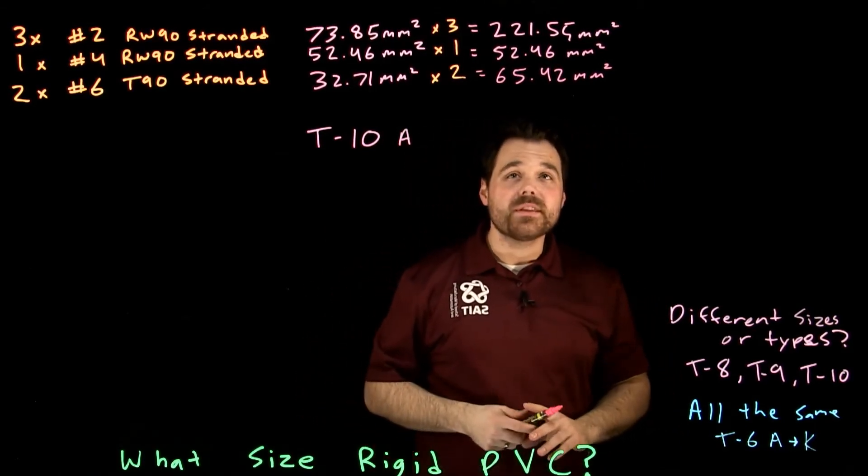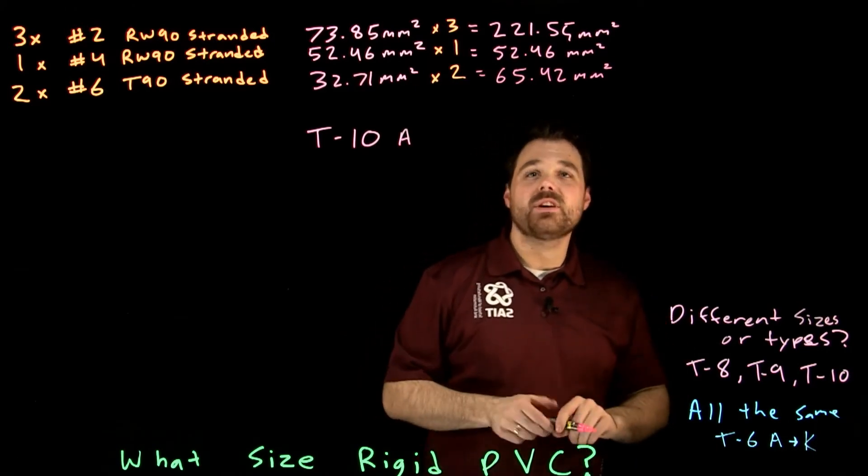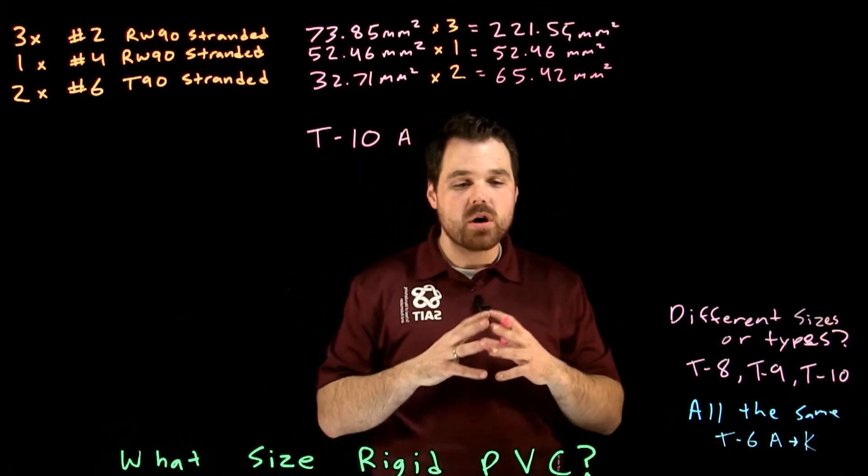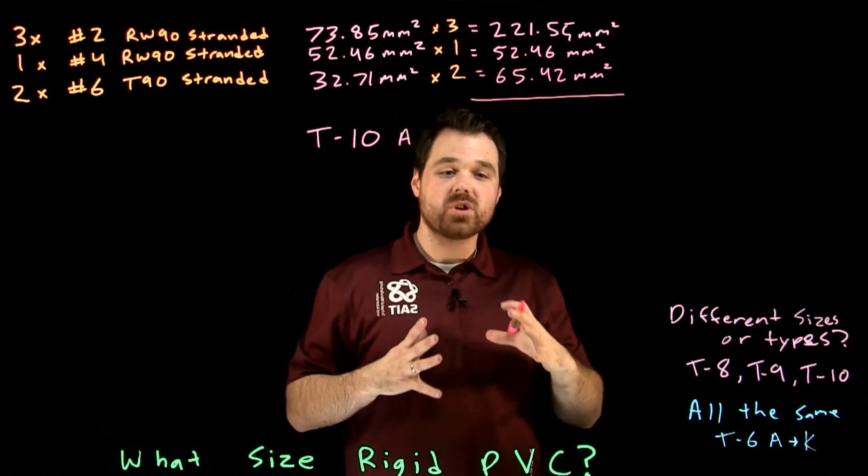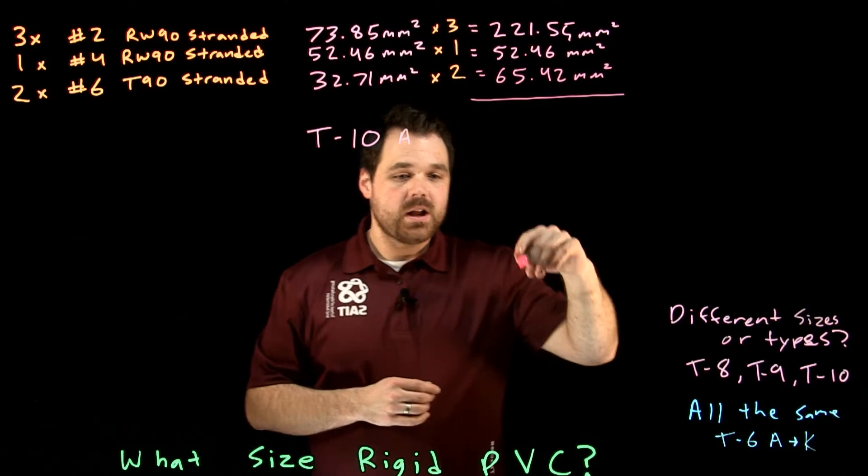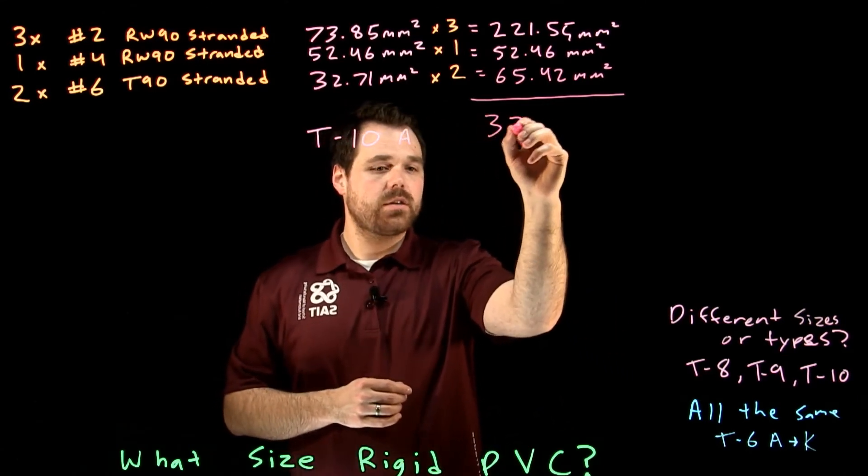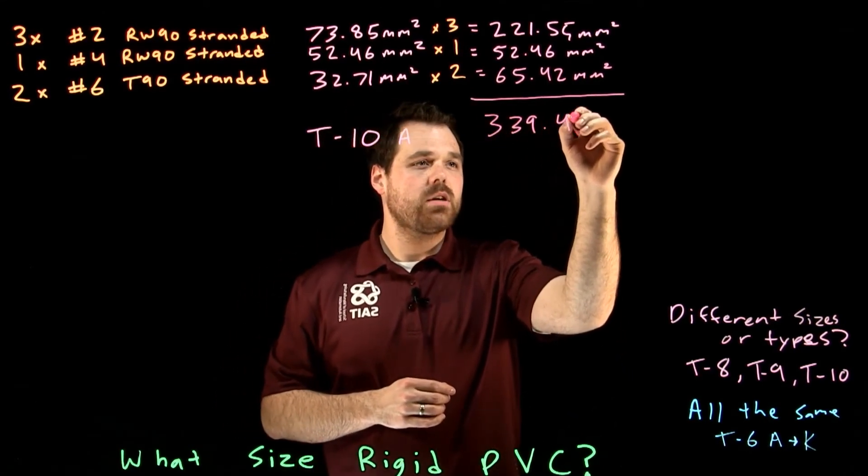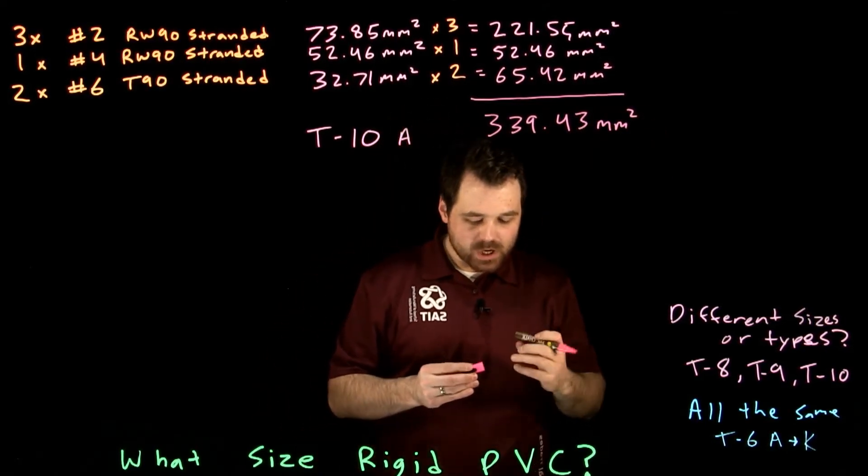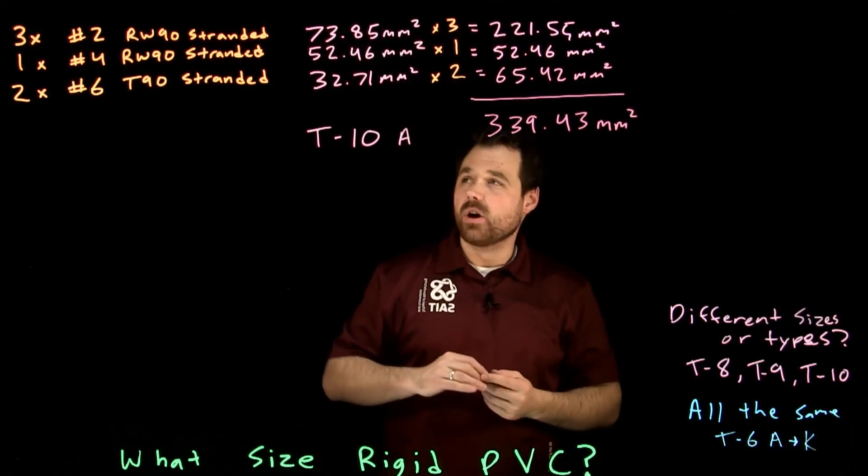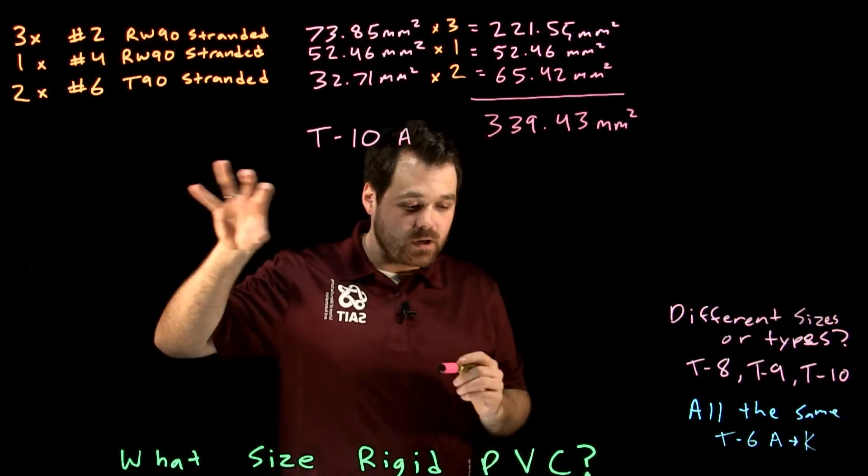So what we do with this info is we have to get a total. The area which all of those conductors are going to take up inside that conduit. So we add all these up and we get the total area that we require is three thirty nine point four three millimeters squared. So that's how much space that all of these conductors, when pulled in a conduit, are going to take up.